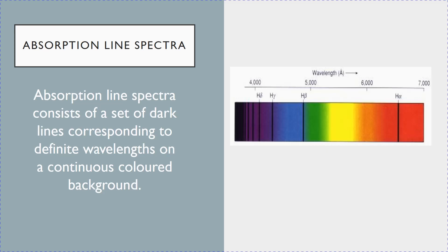Next, we talk about absorption line spectra. In terms of appearance, absorption line spectra consists of, instead of a dark background, a continuous colored background. And instead of the colored lines seen in emission line spectra, absorption line spectra will consist of dark lines on a continuous colored background.